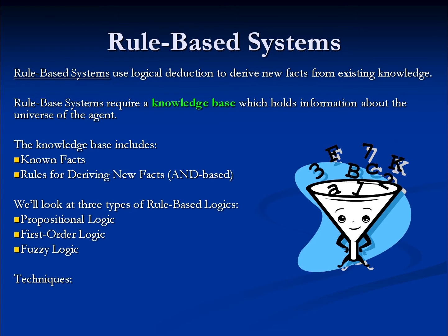There are two main approaches used in rule-based systems. The first, forward chaining, is fairly straightforward and probably the most obvious. We take one or more facts, combine them with a rule, and that allows us to draw a conclusion. If the facts are true and the rule is correct, then the conclusion is inescapable — it's a guarantee, a promise. We know it will happen for sure.